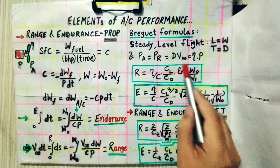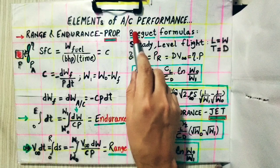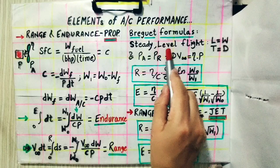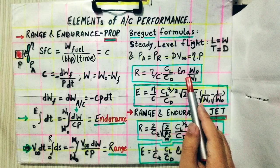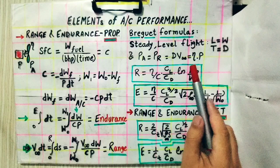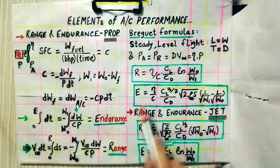For the Breguet formula, we assume steady level flight: lift equals weight and thrust equals drag. This gives us a closed-form solution for the range and endurance formulas. Substituting the values of lift, drag, and power into these integrals allows us to obtain explicit expressions for the range and endurance of the aircraft.